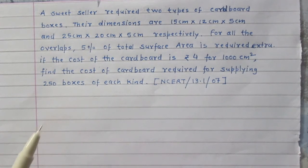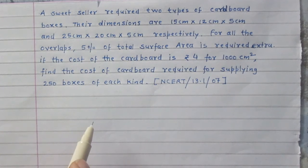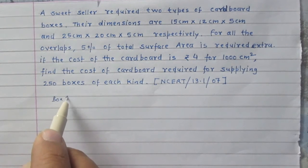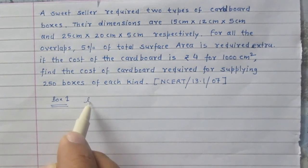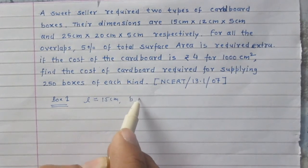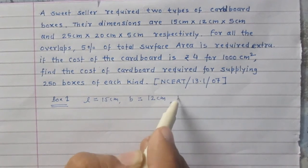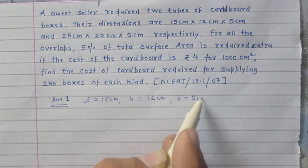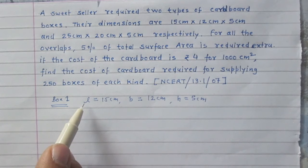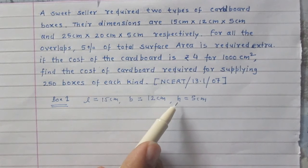There are two kinds of boxes. For box one, its length is 15 cm, its breadth is 12 cm, and its height is 5 cm. We use the letters L for length, B for breadth, and H for height.